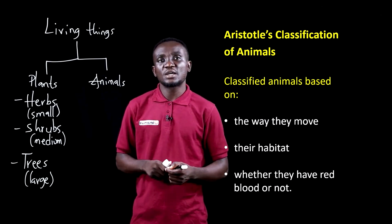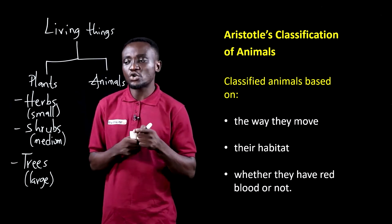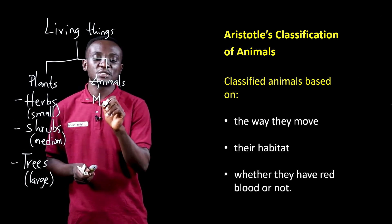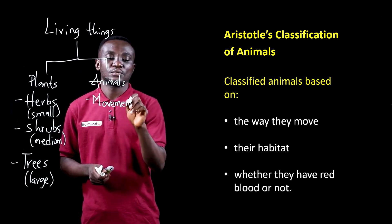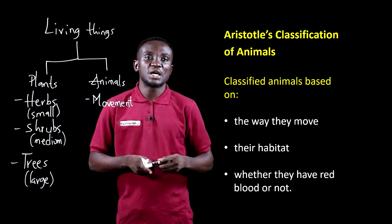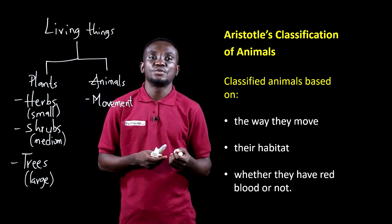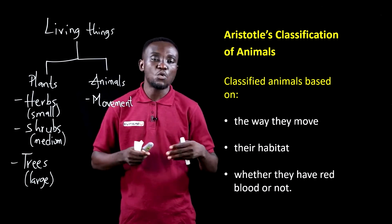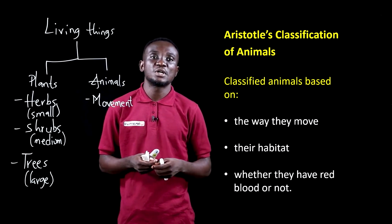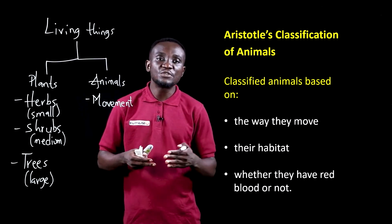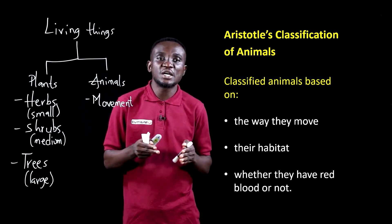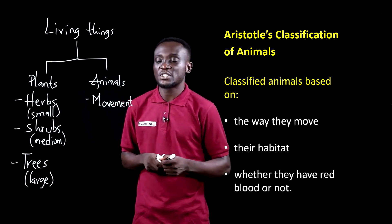The animals he classified based on the way they move. The first criterion is movement — animals that largely flew, moved on land by walking, running, or hopping, and those that moved in water by swimming. He looked at all these different ways animals moved and classified them as such.